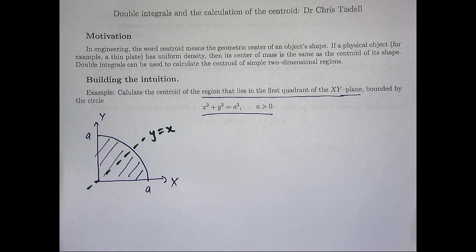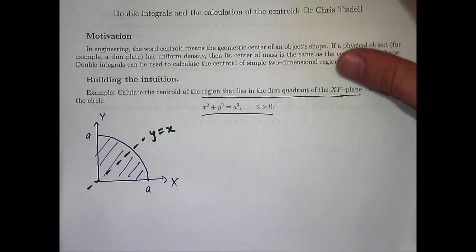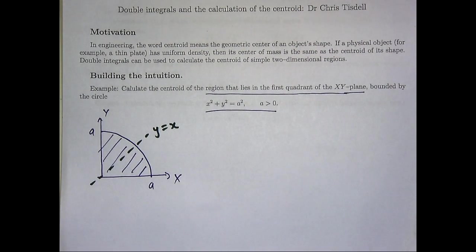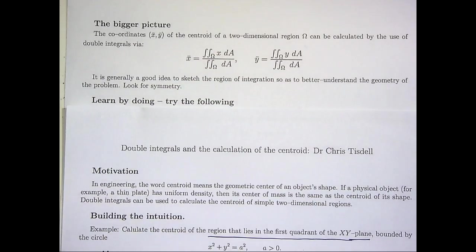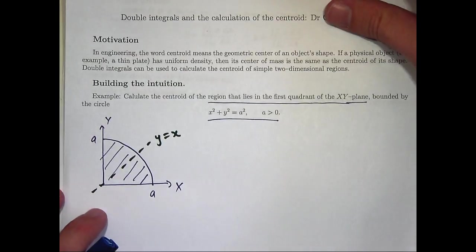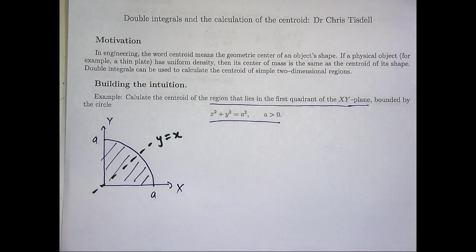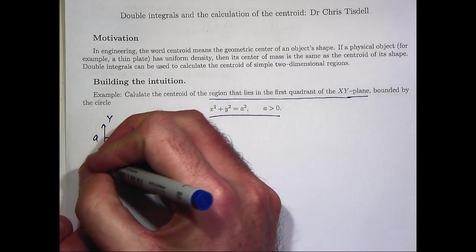Now that observation can save us a lot of time because you only have to calculate one of these coordinates from here. And then you know the other one, they must be equal. So let's label it. Let's say this region's omega.